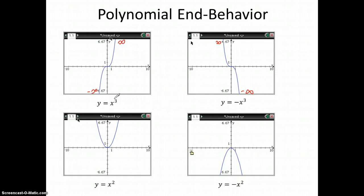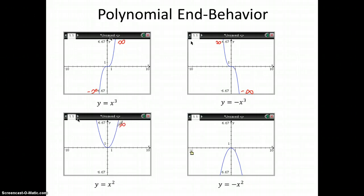Notice that for a cubic — the odd power — we have different end behaviors: one goes up and the other goes down. Whereas for the square, or the even power, they both go the same direction. So the end behavior is positive infinity, positive infinity. The negative, however, does change it to its opposites: negative infinity, negative infinity.